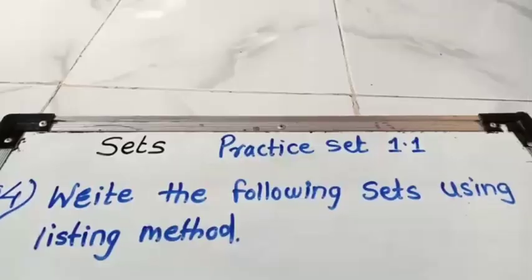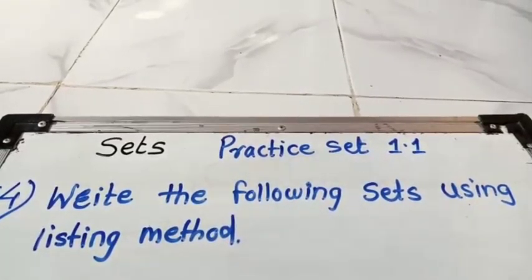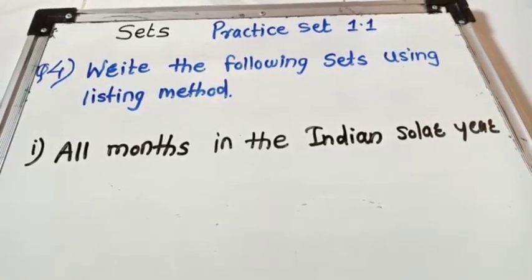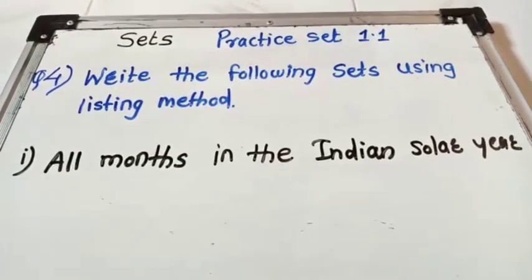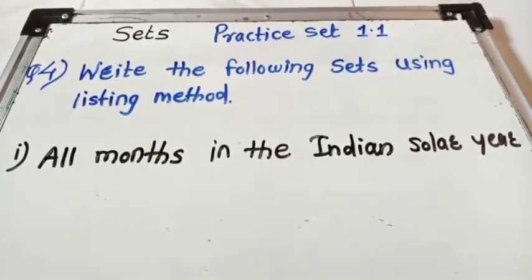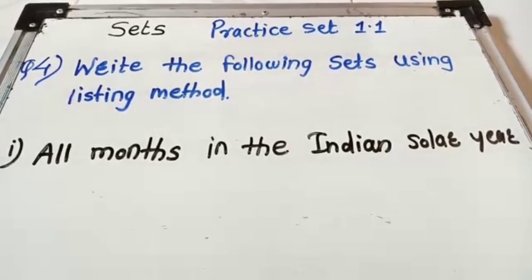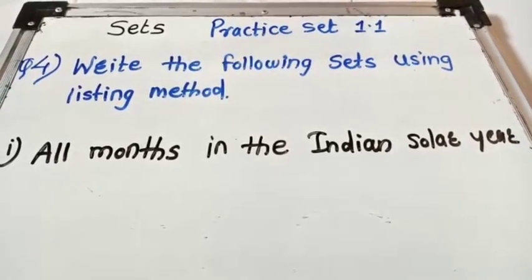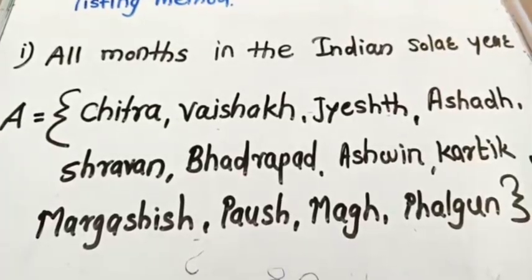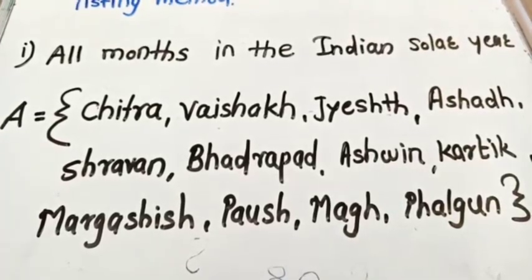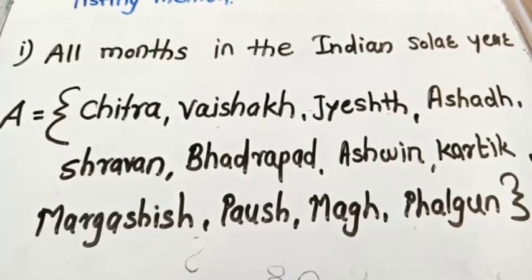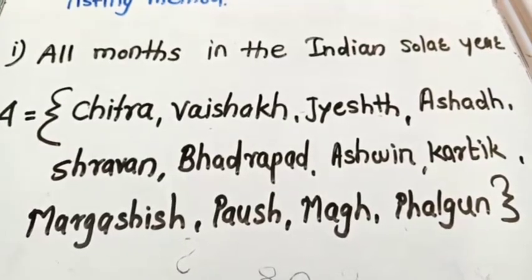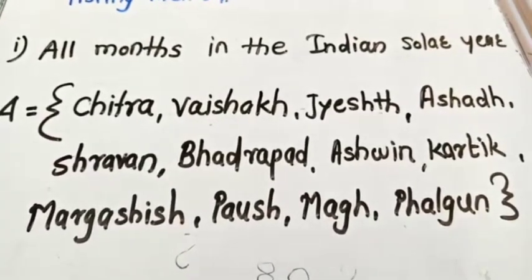Fourth question: write the following sets using listing method. First example: all months in the Indian solar year. The answer is A = {Chaitra, Vaishakh, Jyeshtha, Ashadh, Shravan, Bhadrapad, Ashwin, Kartik, Margashirsha, Paush, Magh, Falgun}.